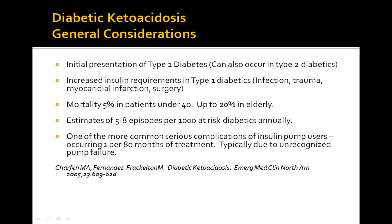Keep in mind that the initial presentation of type 1 diabetes is the key presentation for DKA. DKA occurs in type 1 diabetics and very rarely in type 2 diabetics. There is an increase in glucagon and a decrease in insulin. The hyperglycemia is due to increased gluconeogenesis, increased glycogenolysis, and a subsequent decrease in glucose uptake into the cells. Mortality is 5% in patients under 40 and can be as high as 20% in the elderly.